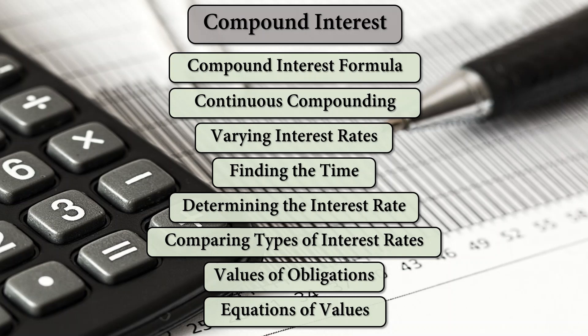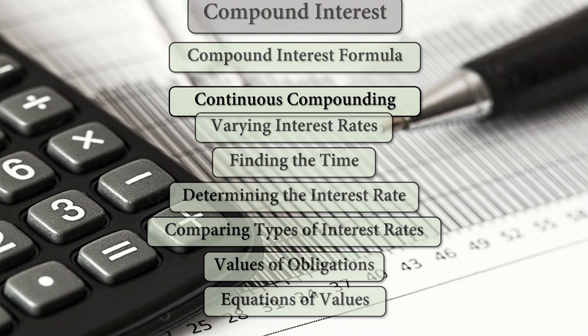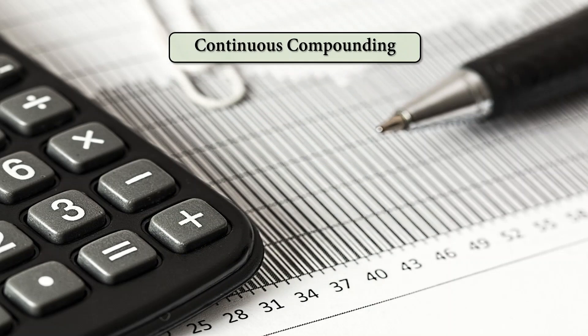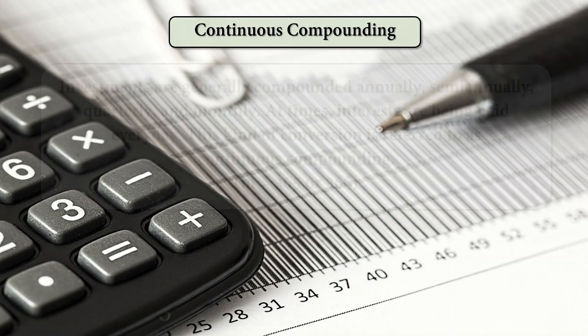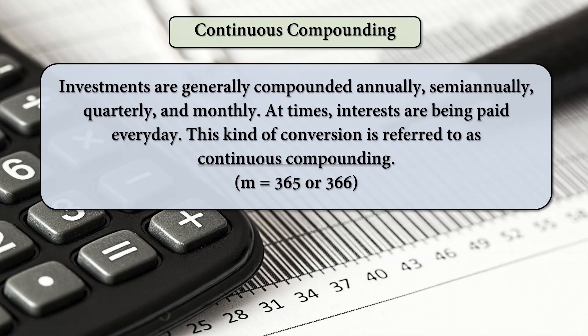The second subtopic under compound interest is continuous compounding. Investments are generally compounded annually, semi-annually, quarterly, and monthly, as we have discussed previously on the compound interest formula.